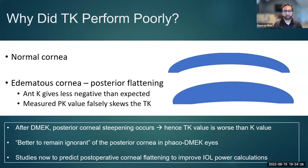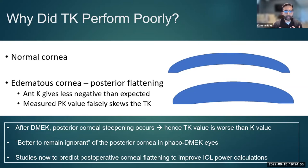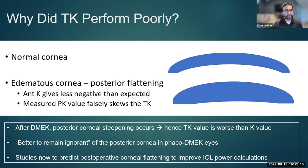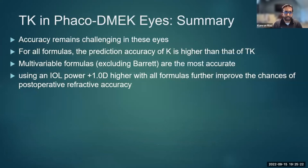Why did TK perform so badly in this cohort? When we have an edematous cornea like with Fuchs, we have posterior flattening. The anterior cornea gives a less negative than expected value, so the measured posterior corneal value falsely skews the generated TK values. After DMEK, the posterior corneal steepening that occurs means the preoperative TK value is actually inaccurate. It's sort of better to remain ignorant of the power of the posterior cornea in these phaco-DMEK eyes. Studies are currently being undertaken to predict postoperative corneal flattening to improve IOL power calculations. Summary: do not use TK for phaco-DMEK — prediction accuracy of K is better.